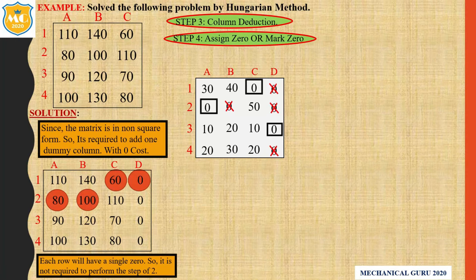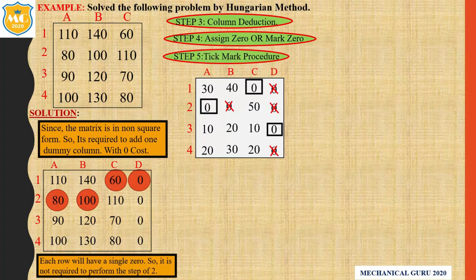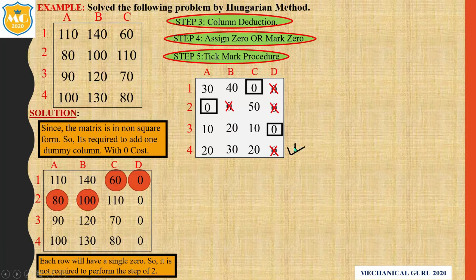Step number 5: tick mark procedure. In the tick mark procedure, mark the row that does not have an assignment. Here the first, second, and third rows are assigned. The fourth row is not assigned, so mark it with tick number 1. This numbering is just for identification purposes — if you have any query or problem, you can identify it using this number.